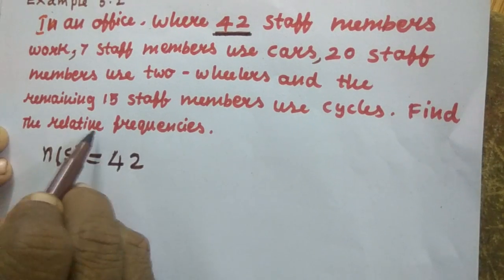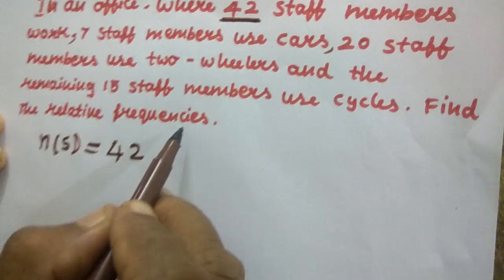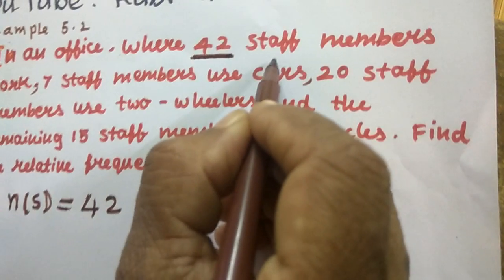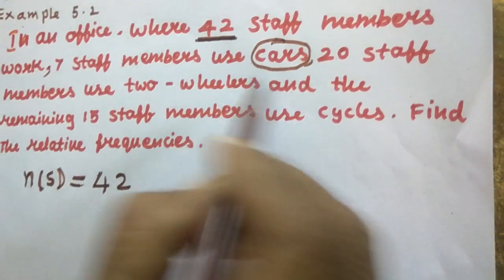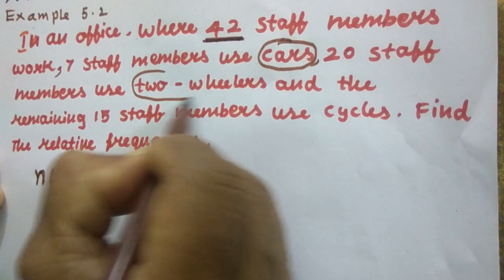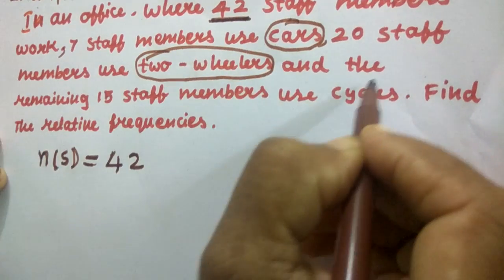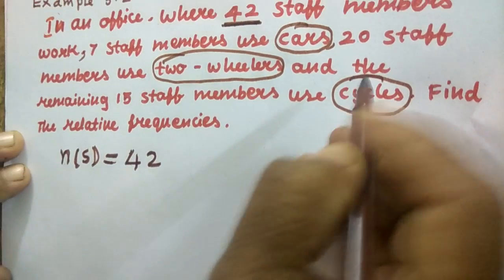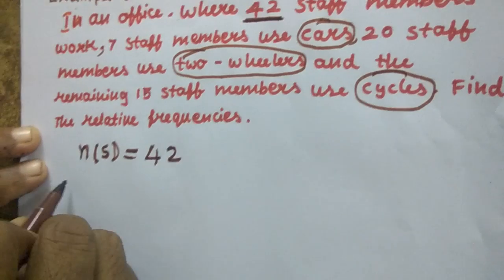They have asked to find the relative frequencies. There are 3 categories: cars, 2 wheelers, cycles. So 3 events.